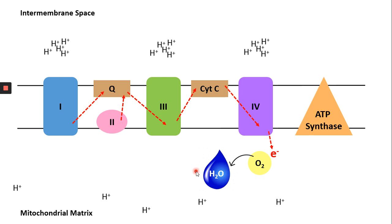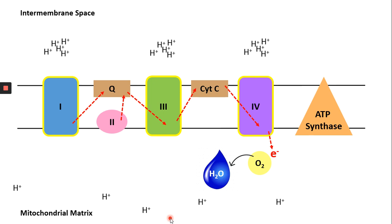As electrons pass from one complex to another, energy coupling occurs driving protein complexes 1, 3, and 4 to pump proton ions from the matrix to the intermembrane space. Remember that protein complex 2 does not pump protons. This creates an accumulation of protons at the intermembrane space compared to the mitochondrial matrix, establishing a proton concentration gradient. Note that FADH2 pumps fewer protons because it starts at protein complex 2, so proton pumping only occurs at complexes 3 and 4. NADH, by contrast, has proton pumping at complexes 1, 3, and 4.